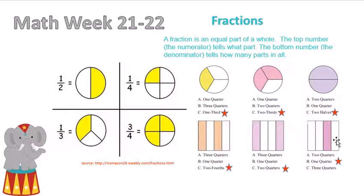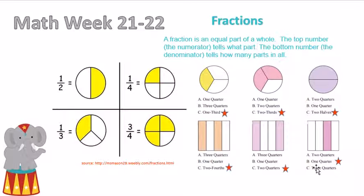Then our last one — we have one, two, three, four in all, and we'll name them quarters. In this instance we're going to name them quarters, and we only have one shaded in, so it will be named one quarter.